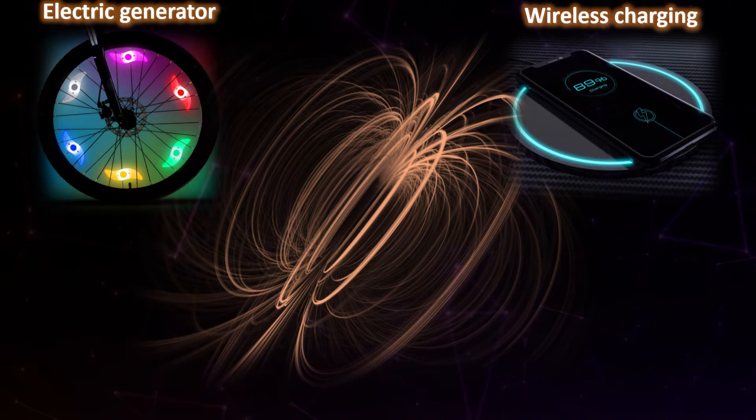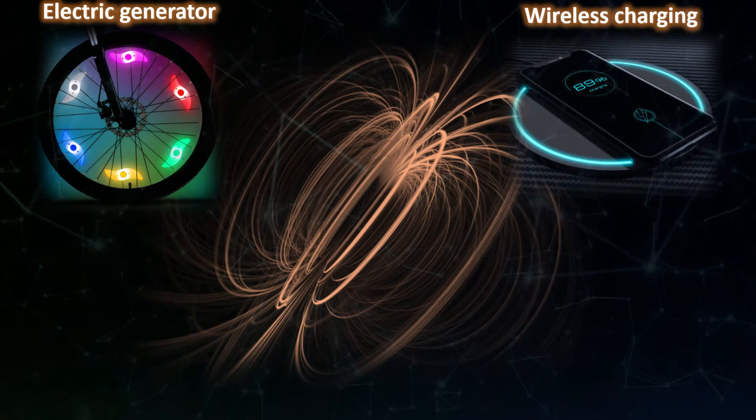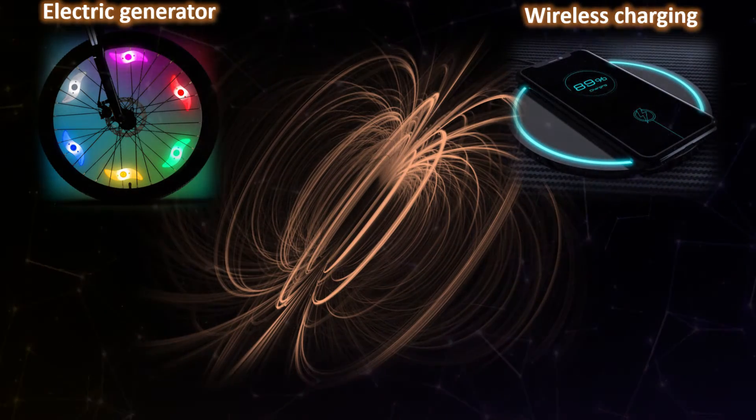An induction coil is used to create an oscillating magnetic field which the receiver coil in the phone converts back into electricity to be fed into the battery.